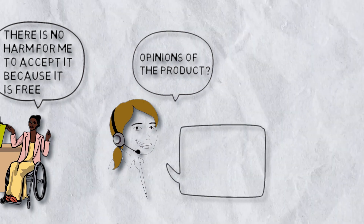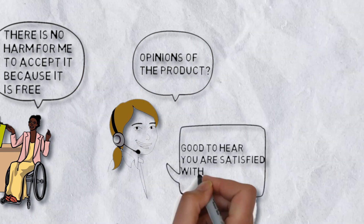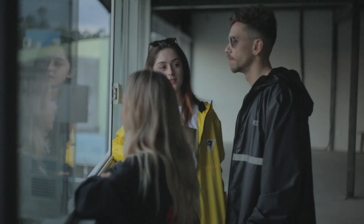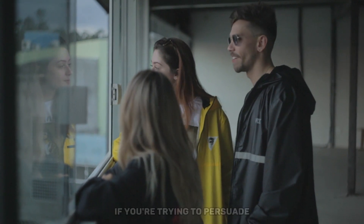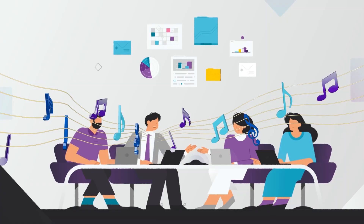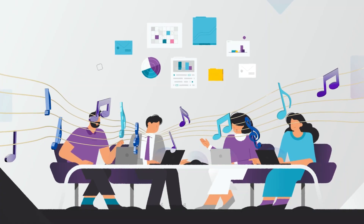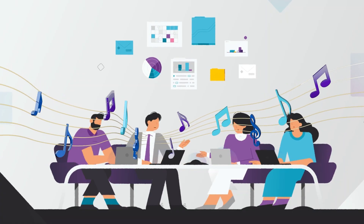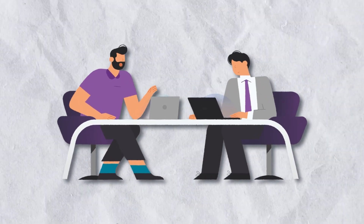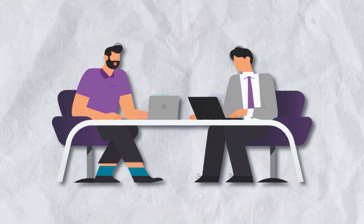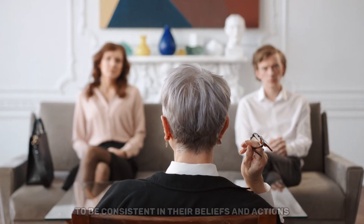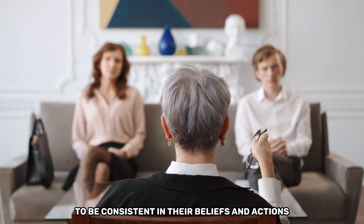In social situations, you can also use the foot in the door effect to your advantage. For instance, if you're trying to persuade your friend to come to a concert with you, you could first ask them to listen to one of the band's songs. If they like it, they might be more willing to come to the concert with you. The reason this works is that humans have a strong desire to be consistent in their beliefs and actions.